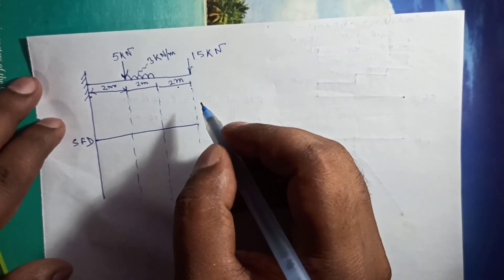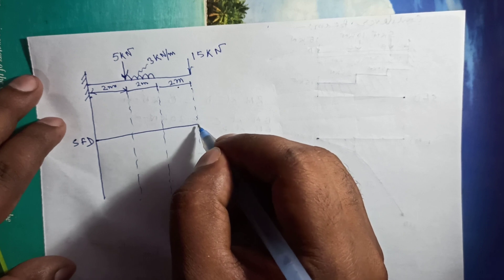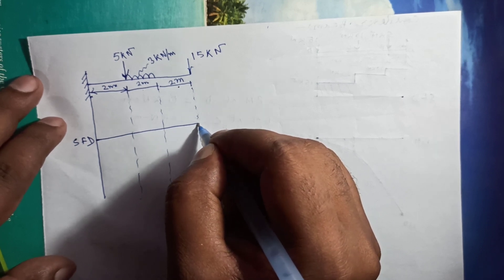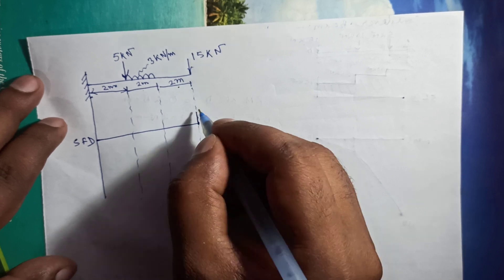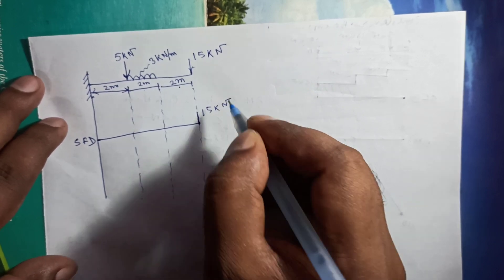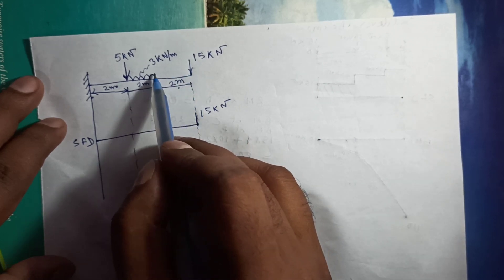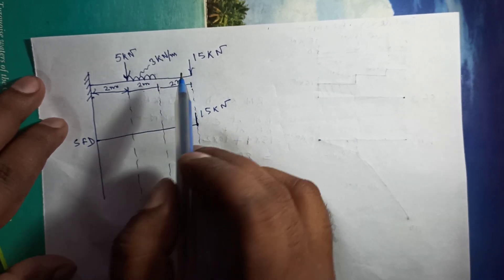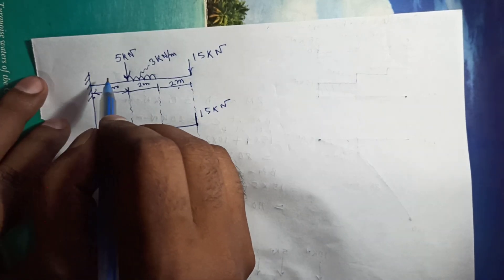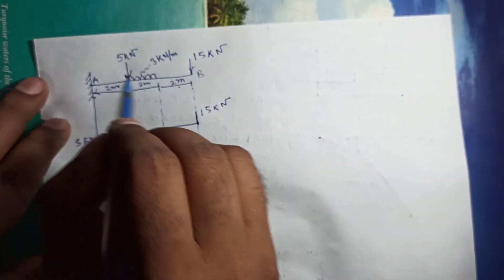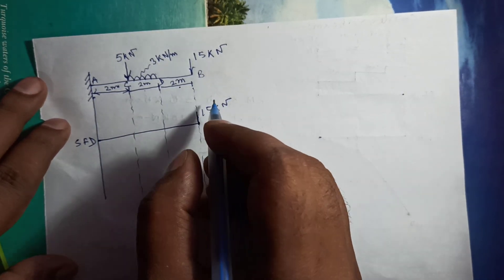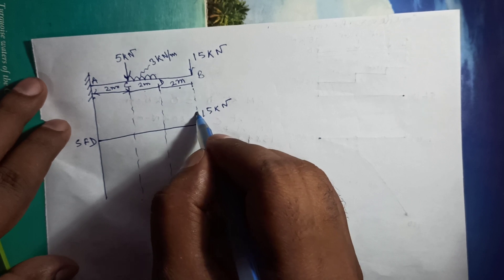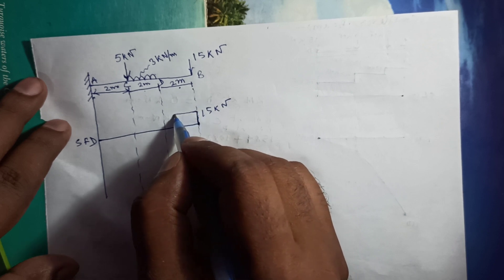We start the calculation from the free end. At the free end, shear force is 15 kilo Newton. Let us name the points: A is the fixed end, B and C are intermediate points, and D is at the free end. At point D, shear force is 15 kilo Newton. As there is no load between D and B, the shear force remains constant — a horizontal line.